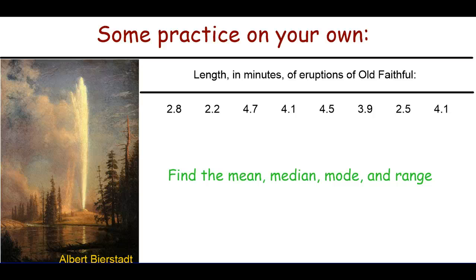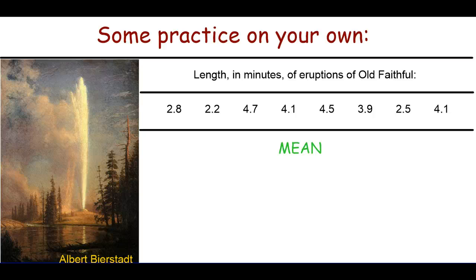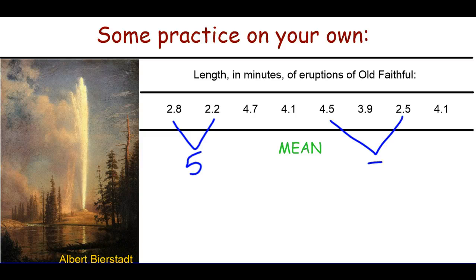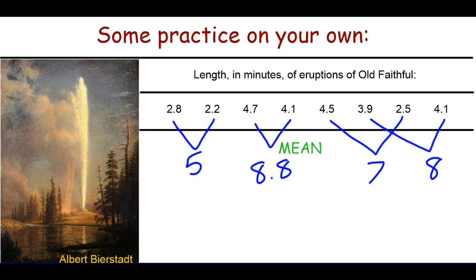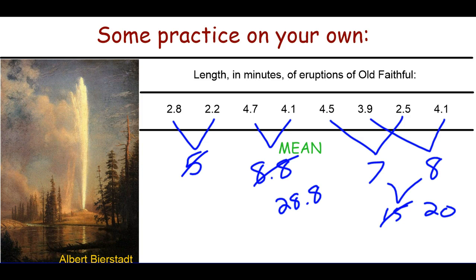Let's start with the mean, which involves the most work. When adding these up, I'll notice some numbers combine nicely: 2.2 and 2.8 add up to 5; 2.5 and 4.5 add up to 7; 3.9 and 4.1 add up to 8; and 4.7 and 4.1 left gives 8.8. Adding these together: 8 plus 7 is 15, plus 5 is 20, giving us a sum of 28.8 for all the values.